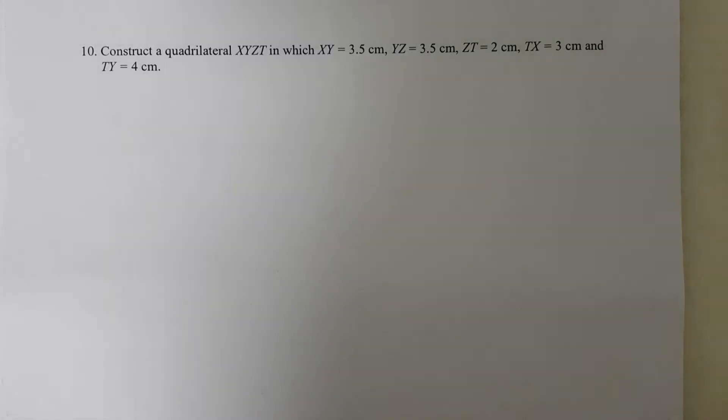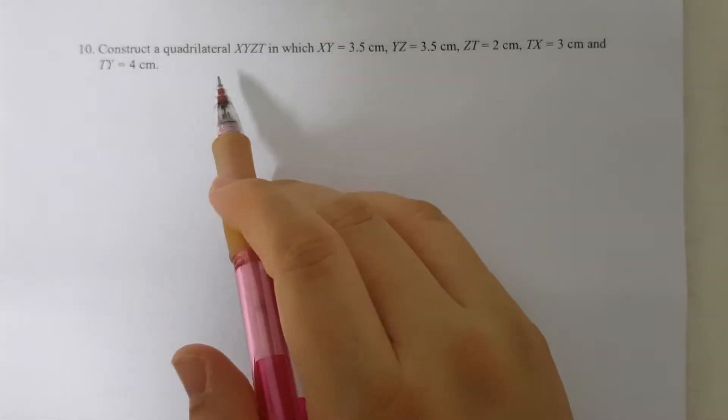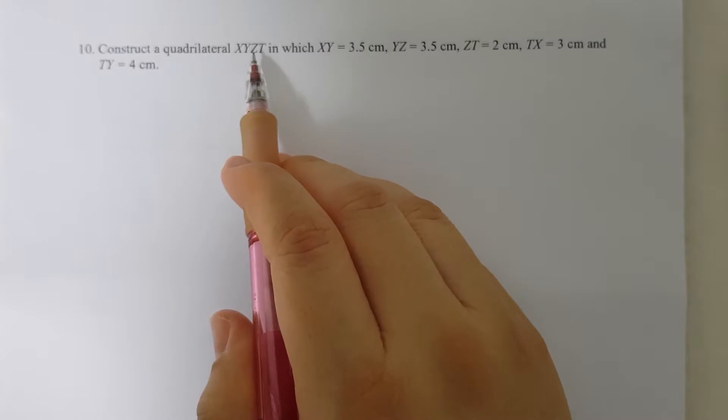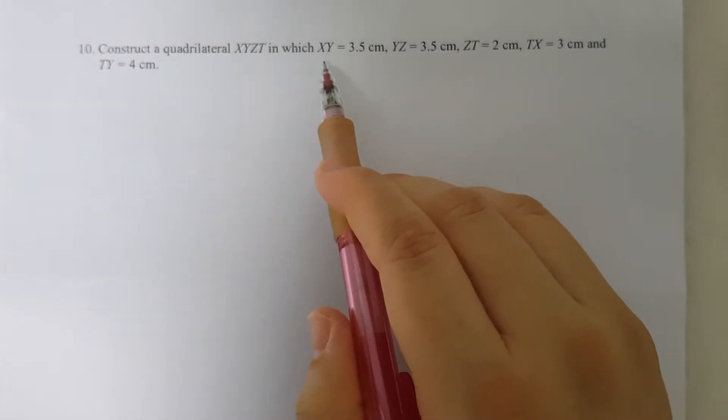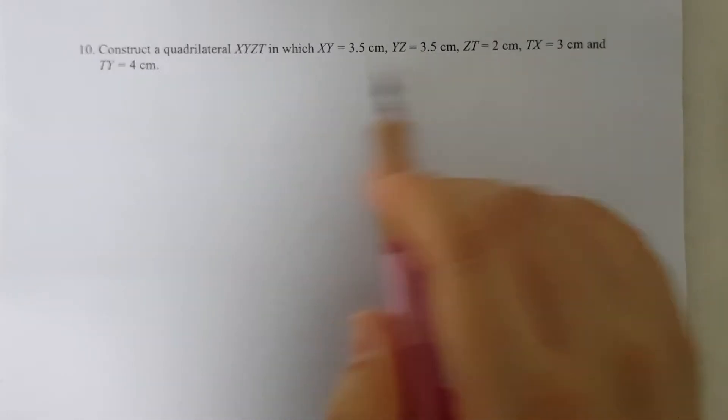Hi, this is Mrs. Wong. We are looking at question 10 of chapter 5, worksheet 2. That's part of your homework. So we need to construct a quadrilateral XYZT in which the information are given.